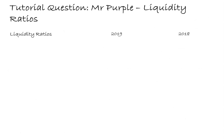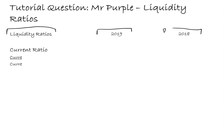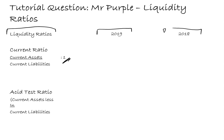Next we'll calculate the liquidity ratios. The current ratio is current assets divided by current liabilities, expressed as a proportion to one. The acid test ratio is current assets less inventory divided by current liabilities, also expressed as a proportion to one. Both liquidity ratios are always expressed as something to one.